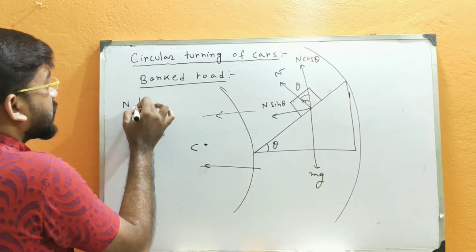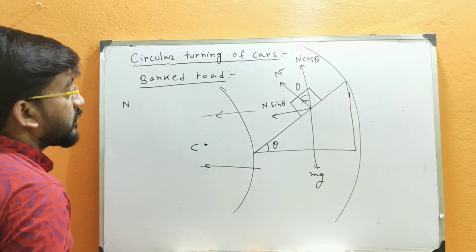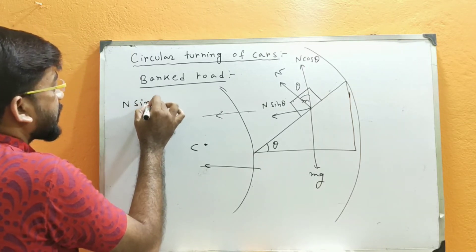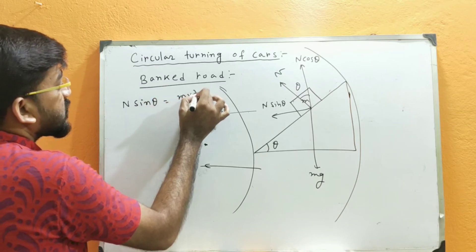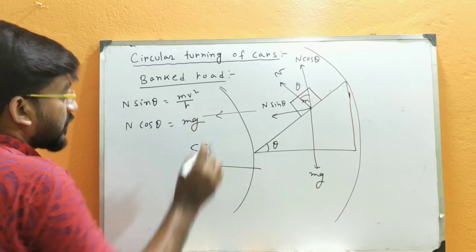So what will happen? Simply, N sin theta equals m v squared by r, and N cos theta equals mg.